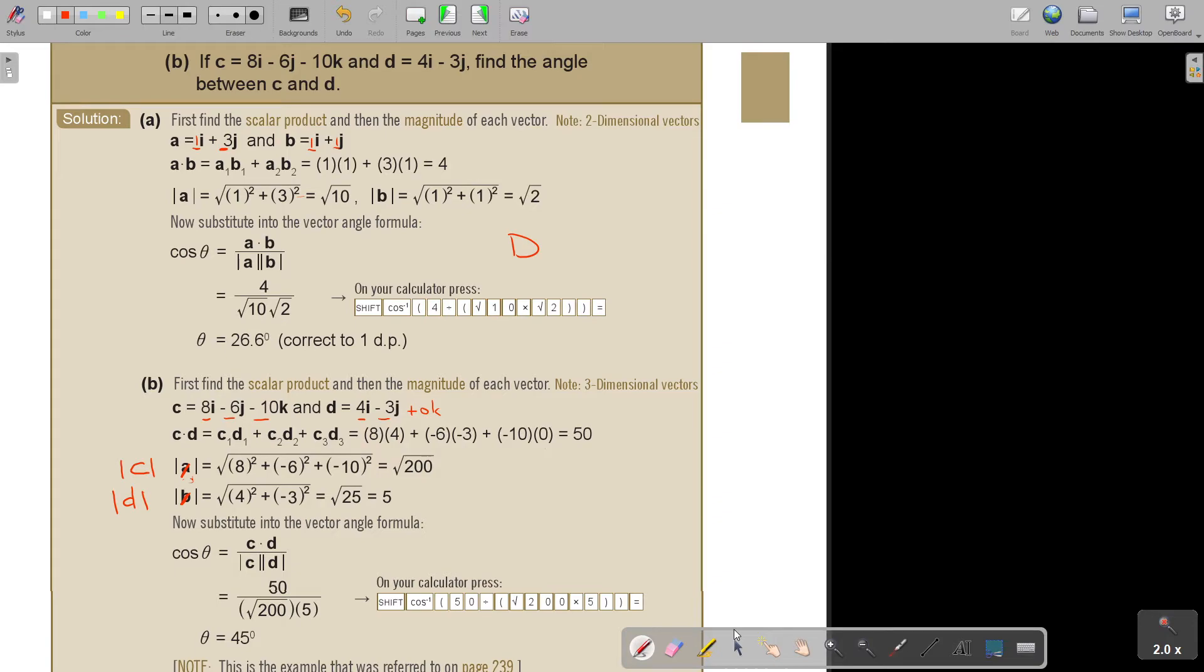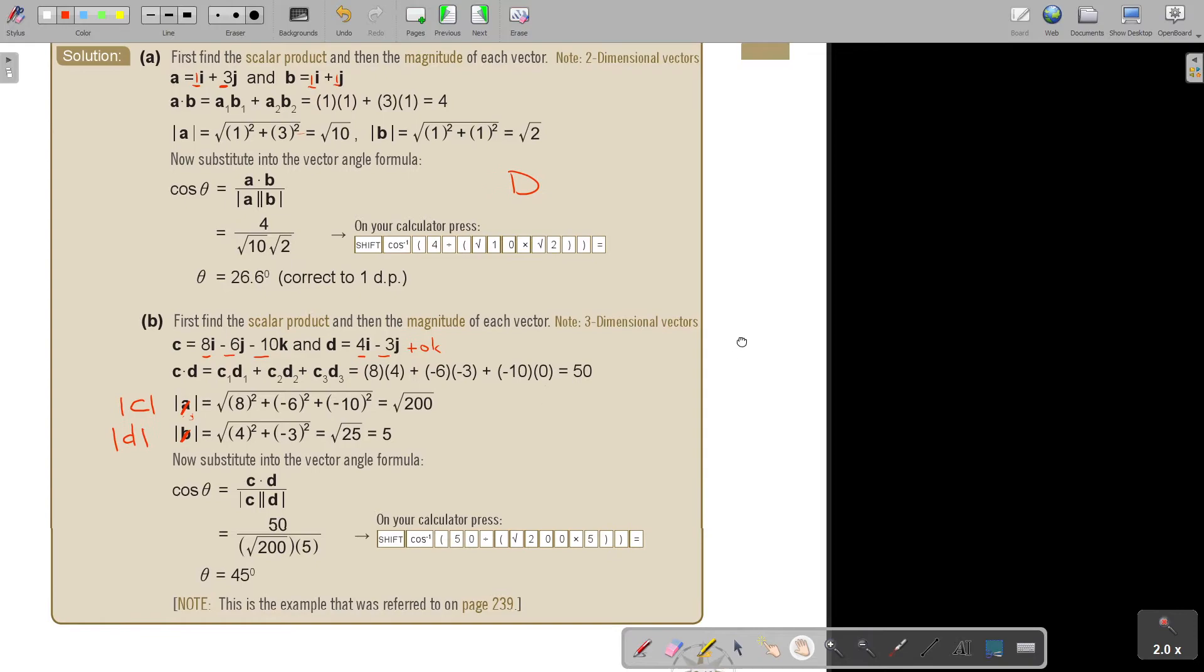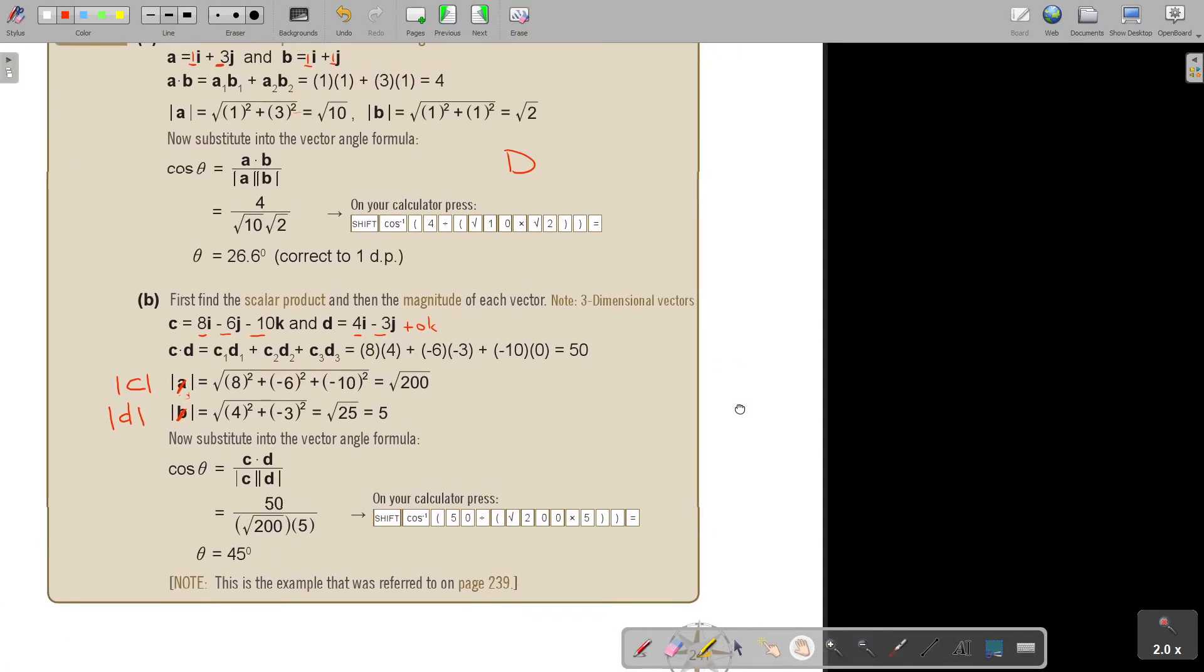And did they say, find the angle between C and D? This is the example that was referred to on page 239. I just want to quickly check on my calculator to see why I didn't make it to one decimal place. So shift cos, bracket, 50, divide, bracket, square root, 200, multiply 5, close the bracket, close the bracket, equals. It's on the dots, but I think the best will be, and I will do that correction also, to make it 45.0 degrees, because it must be, if it's in degrees, correct to one decimal place. I will just correct that in the reprint.